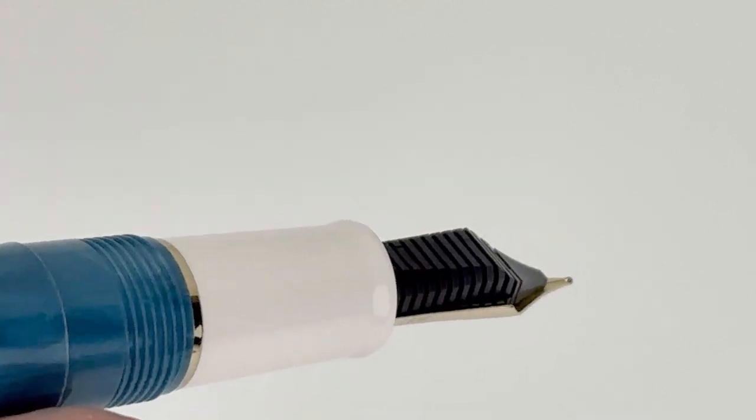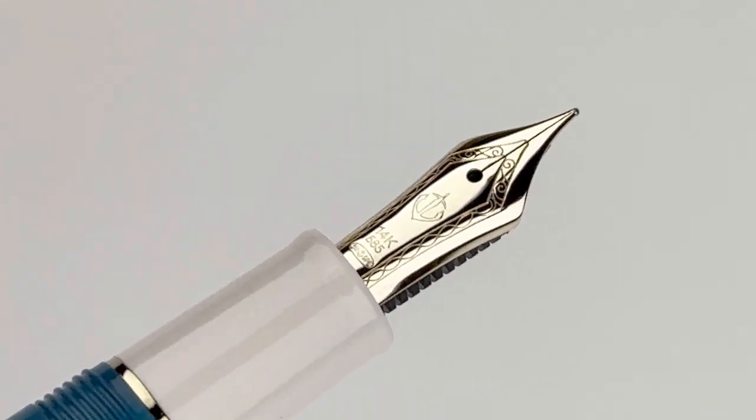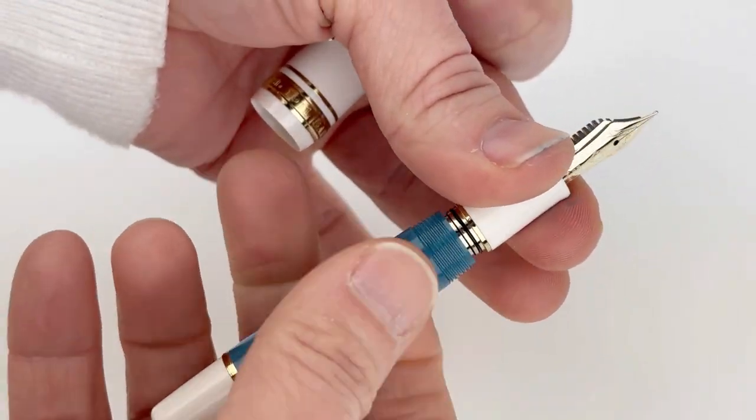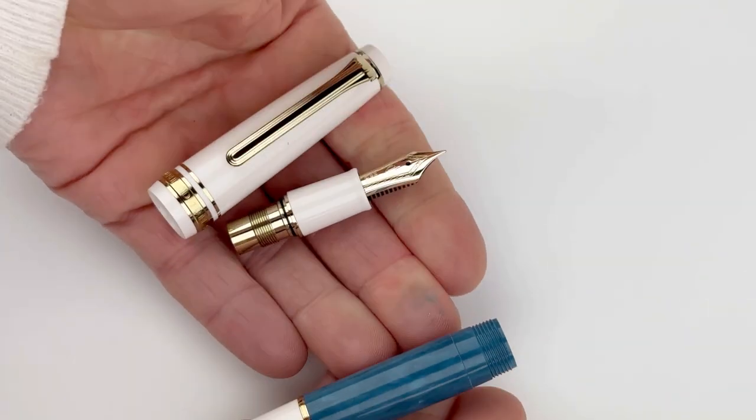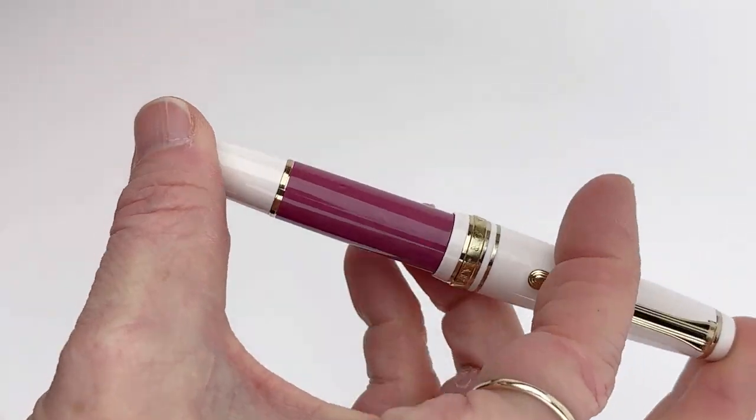If you're a big fan of Sailor gold nibs, this is going to be that same nib you're used to on their other fountain pens fitted with the 14k. It's a cartridge converter system. If you've never used a Sailor before, you'll just pull out one of those ink cartridges and pop it in and it's ready to go.